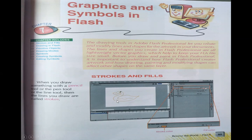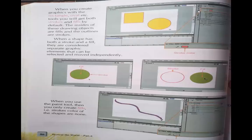When we draw something with the pencil tool, the boundary that appears is called the stroke, and the color filled inside the shape is called the fill color. Both the stroke color and fill color appear in the Property panel. The stroke color is shown as orange, and the fill color is appearing as none because we had not filled anything in this shape.